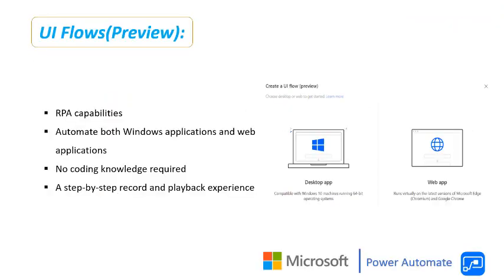Before starting this module, we want to know what UI Flow is. Microsoft's RPA capability in Power Automate is called UI Flows. UI Flows have RPA capabilities — robotic process automation capabilities — to automate tasks. By using UI Flows, we can automate both Windows applications and web applications without any coding knowledge. UI Flows has a step-by-step record and playback experience that walks you through the whole process.